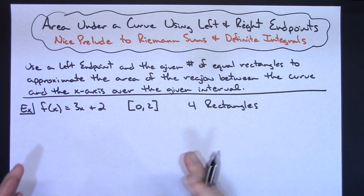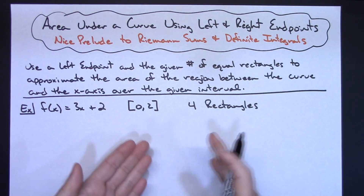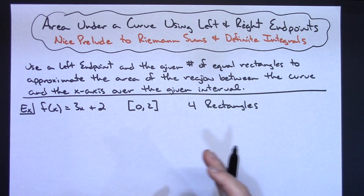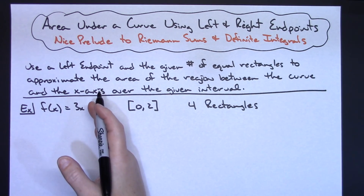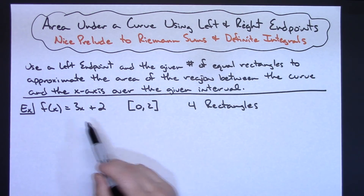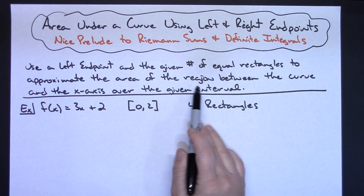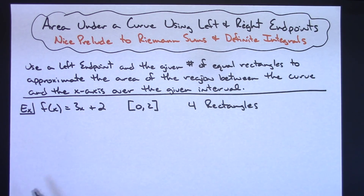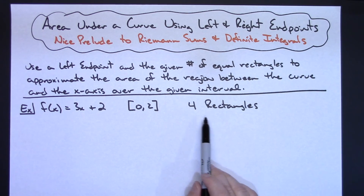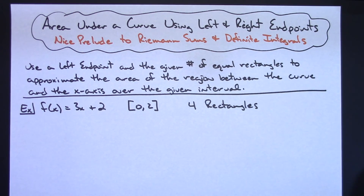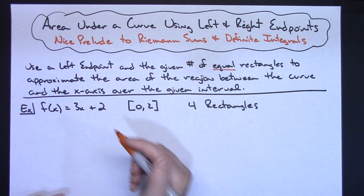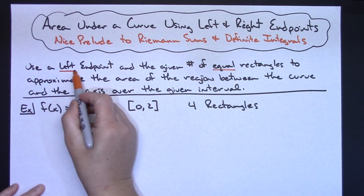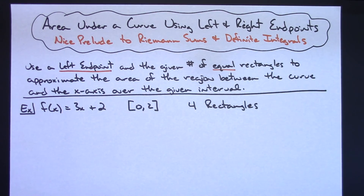I'm only going to work out one specific function on one given interval. We'll do a left endpoint first, then a right endpoint, and look at those estimates. The directions say: use the left endpoint and the given number of equal rectangles to approximate the area of the region between the curve and the x-axis over the given interval. In this example we have four rectangles with equal intervals, using a left endpoint to estimate the area.